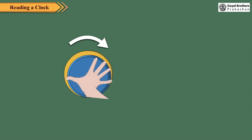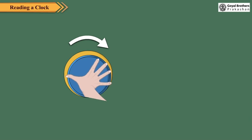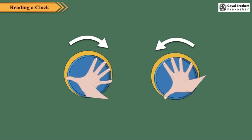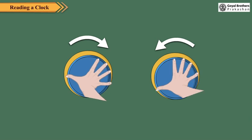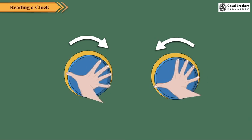When you close the lid of a jar, you go clockwise. And when you open it, you go anticlockwise.